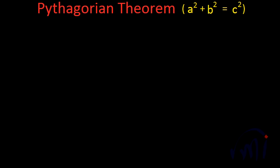In this video we are going to prove one of the very famous theorems in geometry, which is the Pythagorean theorem. As you all know, the Pythagorean theorem is A squared plus B squared is equal to C squared.